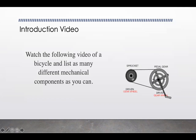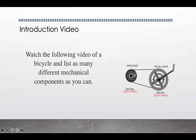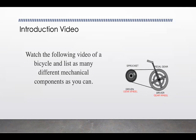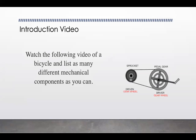We can see this is a bicycle driving a sprocket at the back with a chain. We've got our driver pedal gear and sprocket. We're going to watch a video — pay attention and try to think of as many different mechanical components as you can.